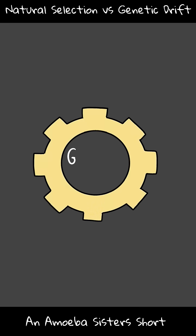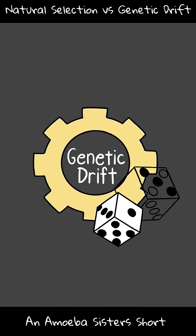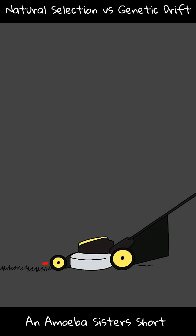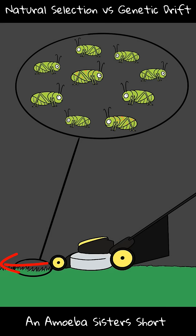Genetic drift involves a change in the genetic makeup in a population too, but with genetic drift it is due to random chance. If a lawnmower happens to go through an area where more solid green grasshoppers happen to be at that time, the surviving population now has a different genetic makeup than the original, which can impact future generations.